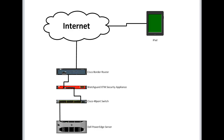The VPN will be established between the iPad and the WatchGuard XTM security appliance. The security appliance will perform authentication and will establish the phase one and phase two settings of the VPN connection, so everything necessary to bring up the tunnel will occur here.